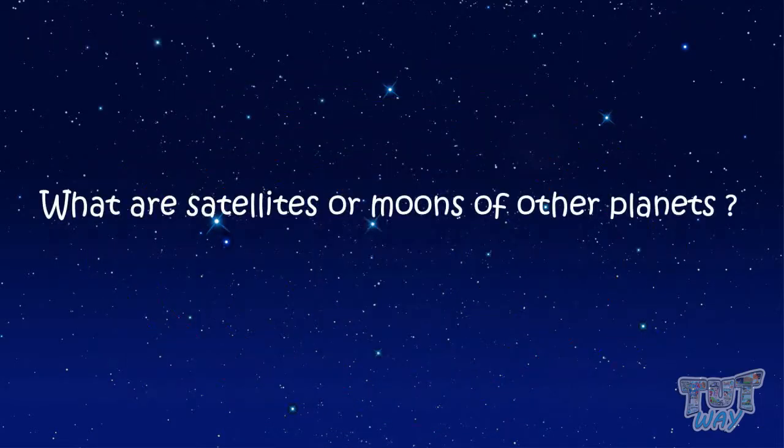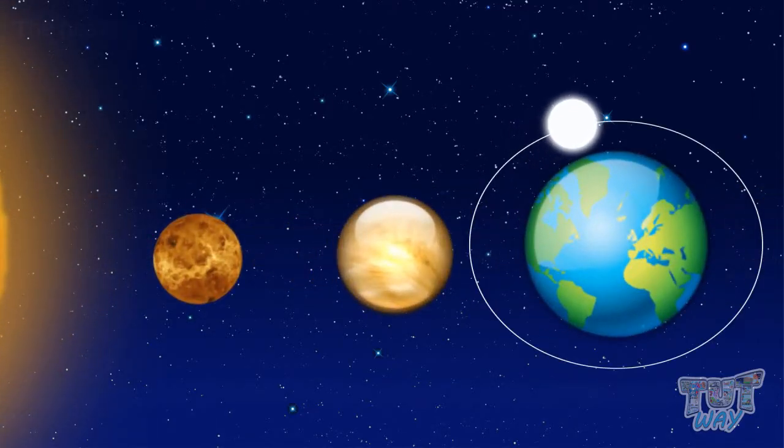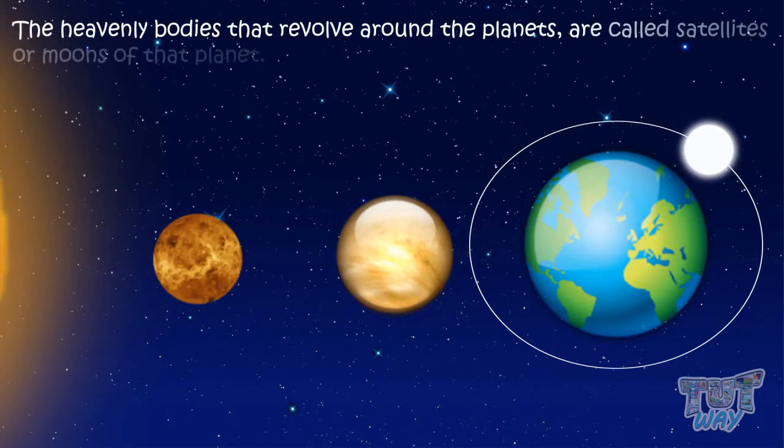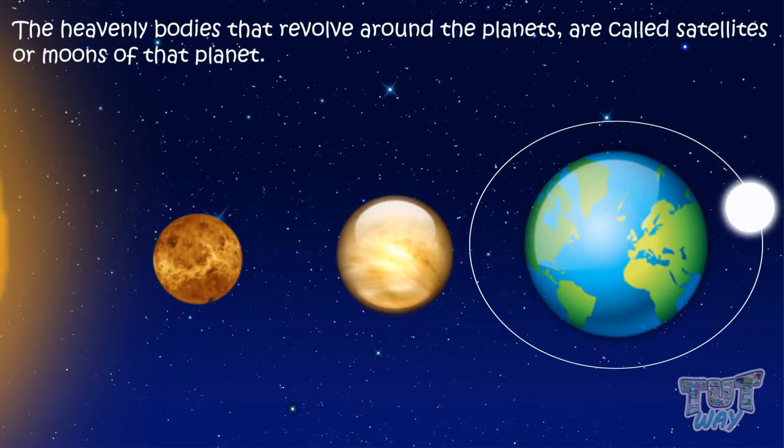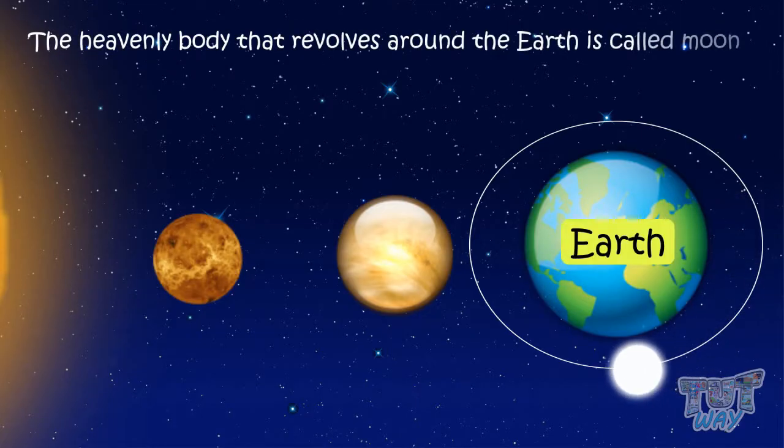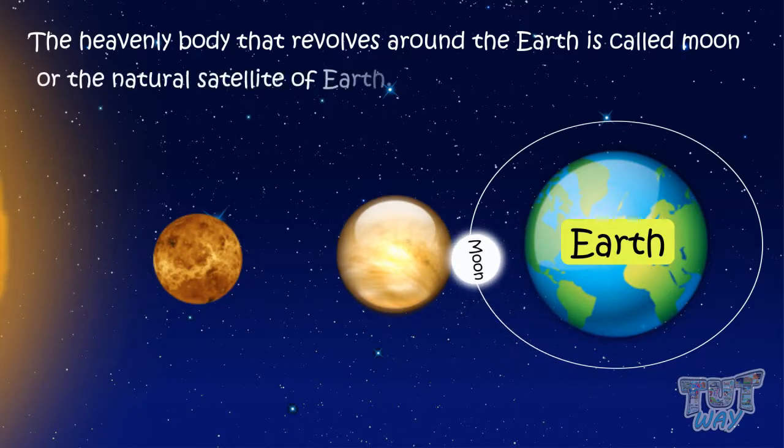Now, let's see what are satellites or moons of other planets. Heavenly bodies that revolve around the planets are called satellites or moons of that planet. Like, heavenly body that revolve around the Earth is called moon or the natural satellite of the Earth.